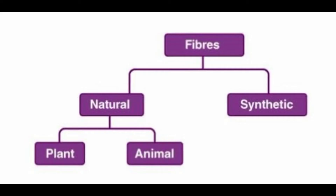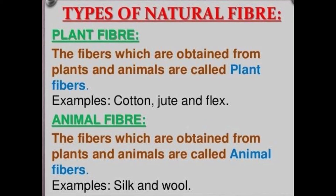Generally, there are two types of fibers: natural fibers and synthetic fibers. Natural fibers are obtained from natural sources — we get them from plants and animals. Plant fibers include cotton and jute. Animal fibers include silk and wool. Both are natural sources.